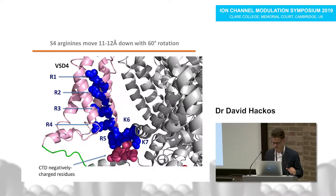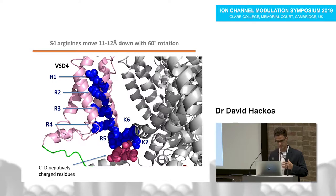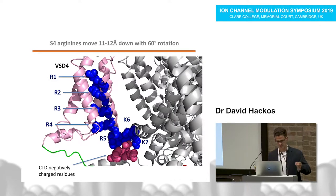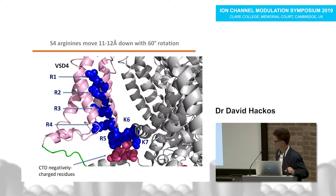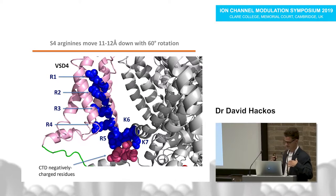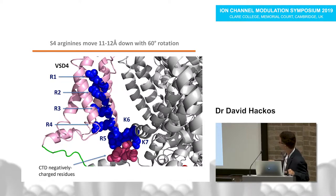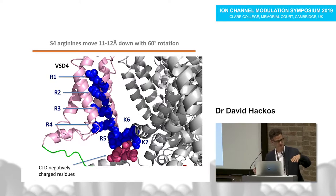The voltage sensor is in the downward position in a manner very similar to our second ProTx2 structure. However, in this case the voltage sensor is much longer — VST4 is about twice as long as the other voltage-sensing domains in sodium channels. For the first time, since this is the first time VST4 has been studied in the down state, we see that in the down state these extra charge residues in the voltage sensor are bunched up at the base of the voltage sensor and interact with a patch of negatively charged residues on the upper surface of the C-terminal domain nestled below VST4.